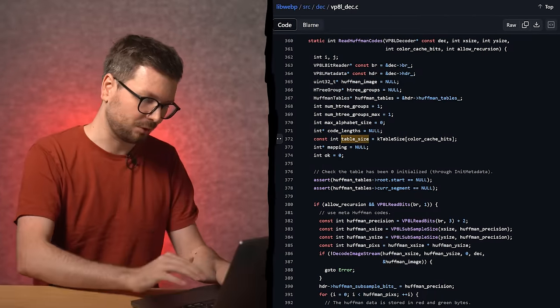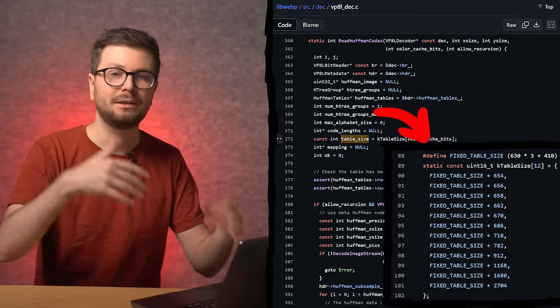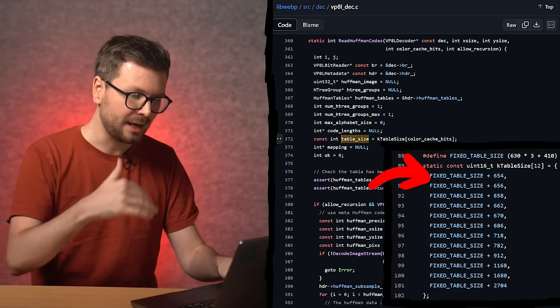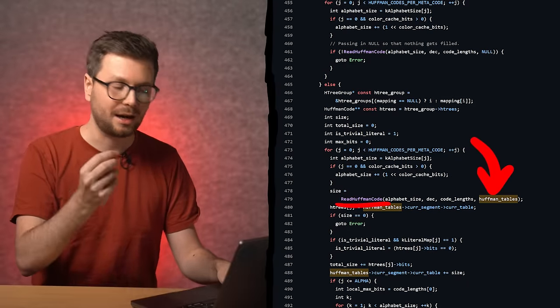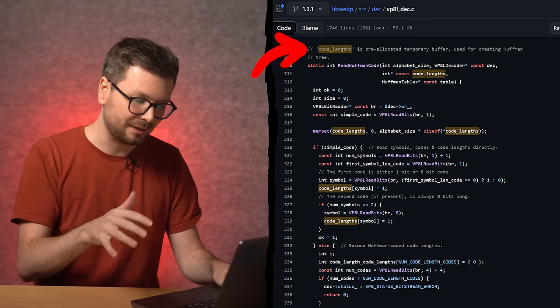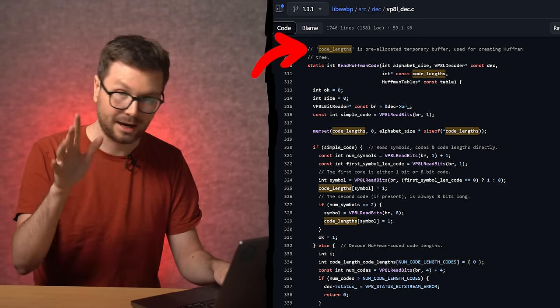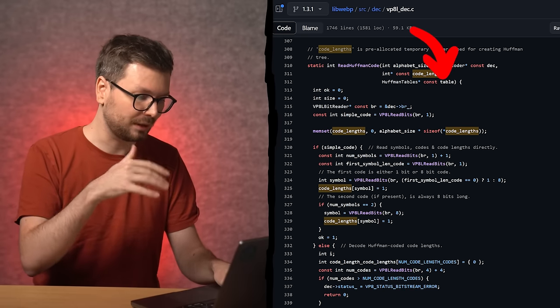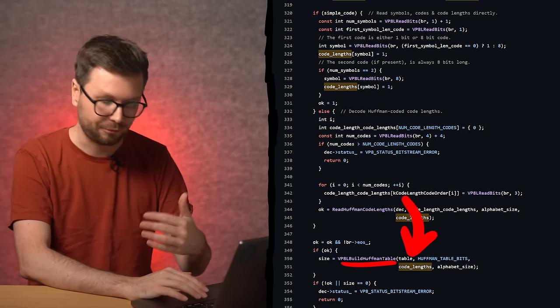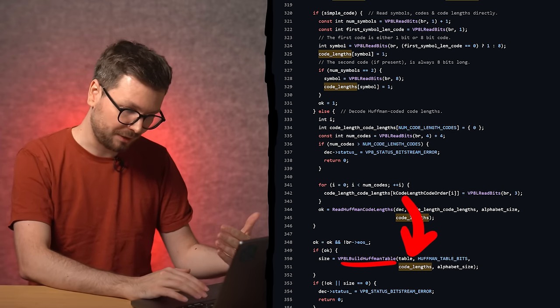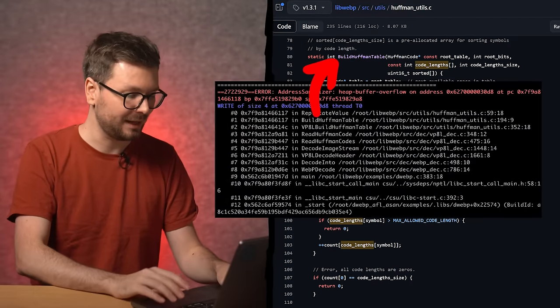Let's peek into the source code. Here we can see that the kTableSize array is used based on the color cache bits to determine the maximum table size. And then later this one huge table is allocated and passed into ReadHuffmanCode. Here a comment says that the code length array is used to create the Huffman tree or the Huffman table. So keep that in mind. That array will become important. But let's first follow the path of the table buffer.